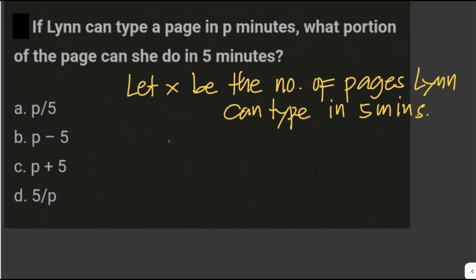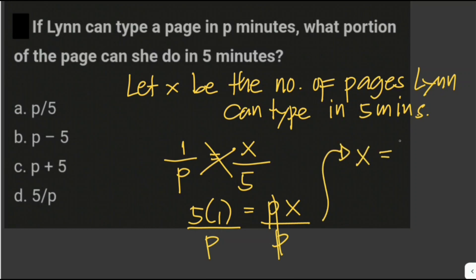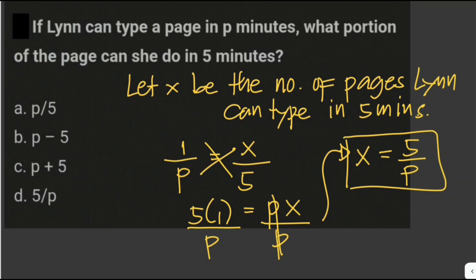So we set up: 1 is to P equals X is to 5 minutes. Cross multiplying gives 5 times 1 equals P times X. Dividing both sides by P, therefore X equals 5 over P. So Lynn can type 5 over P pages in five minutes. The answer is letter D.